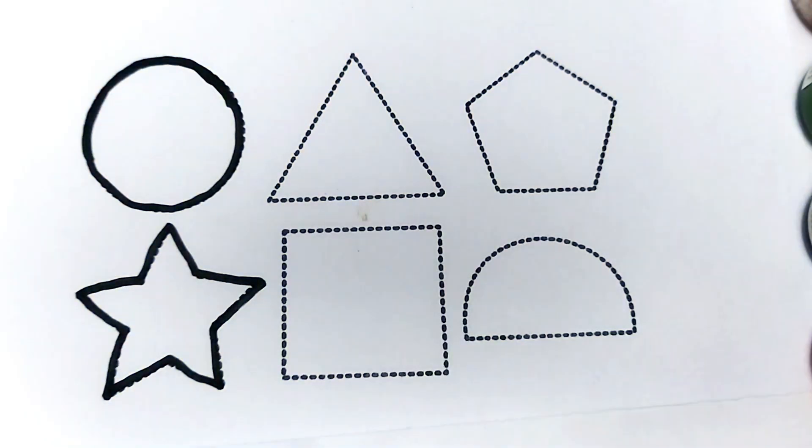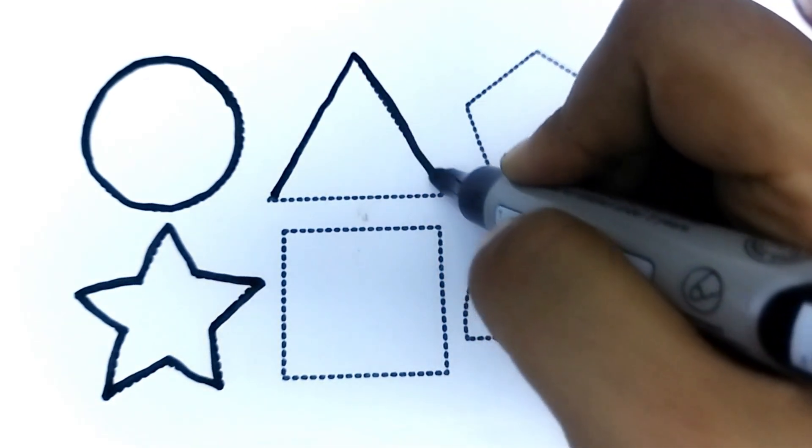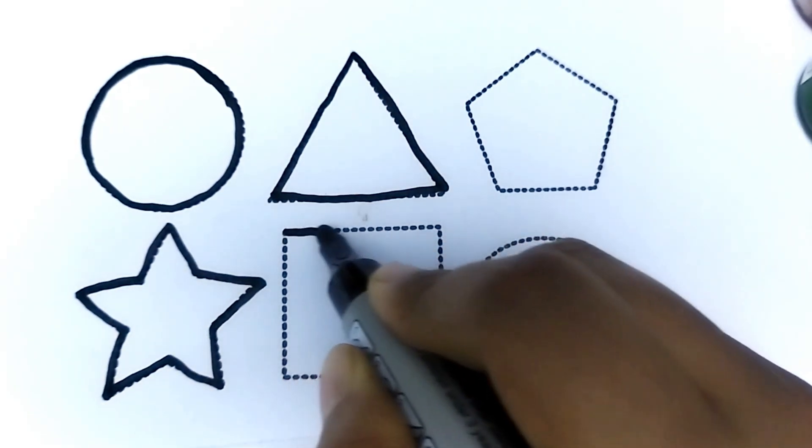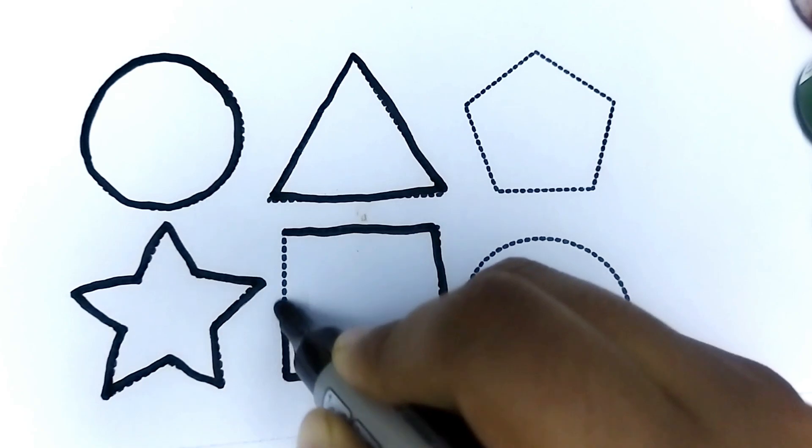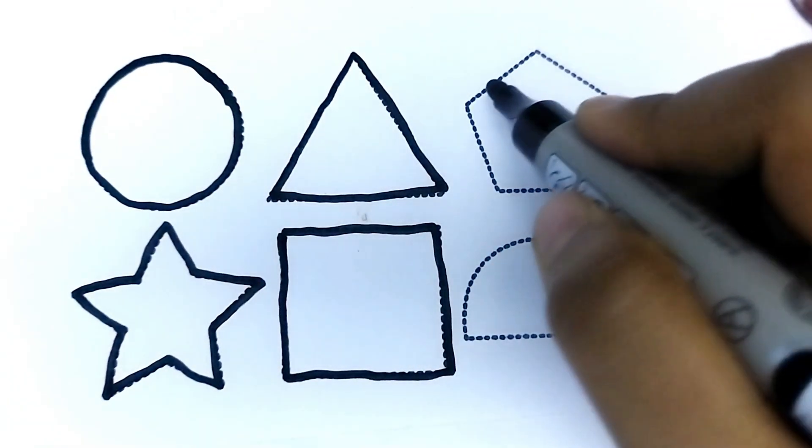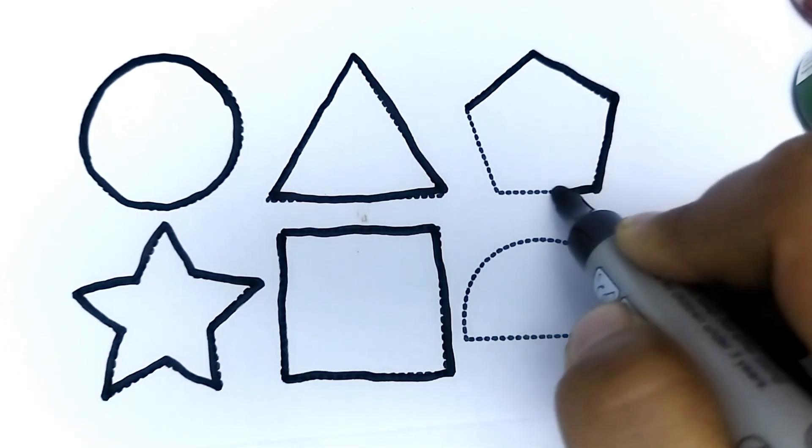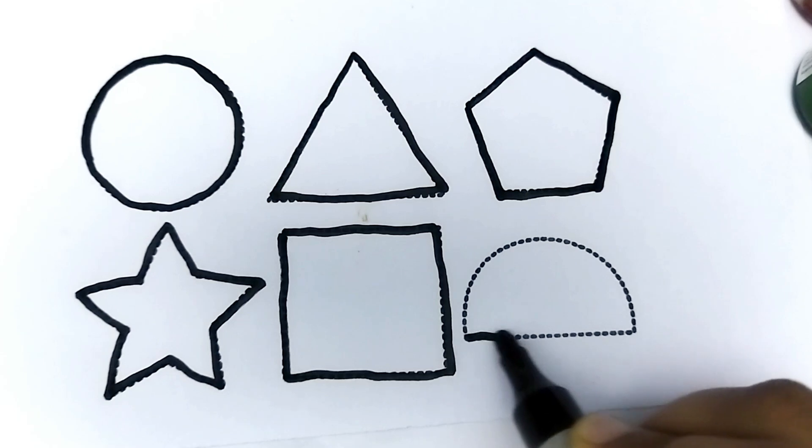Triangle, triangle, triangle. Square, wow square. Pentagon, this is pentagon shape. Semi circle.